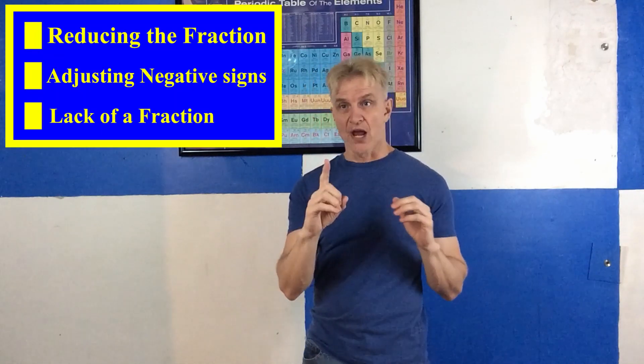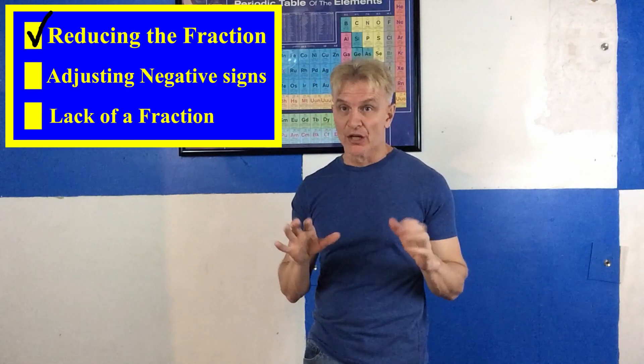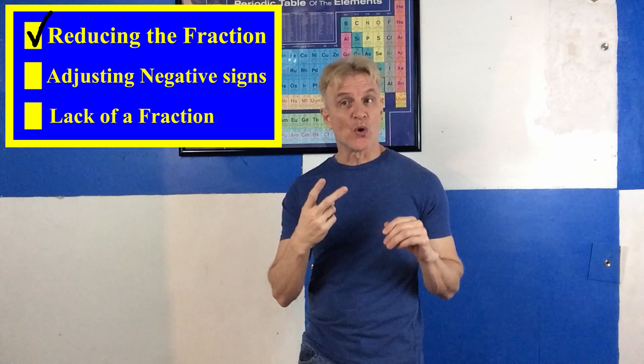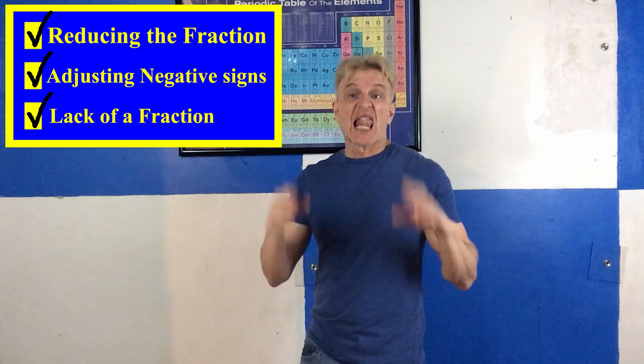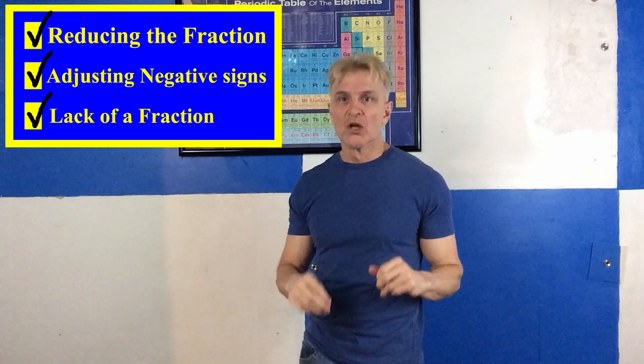Let's discuss the possibilities that arise when you obtain the slope. In particular: one, reducing the fraction; two, adjusting the negative signs; three, lack of a fraction. So, using M as the slope, let's zip-zap through all possible cases and a little bit more.